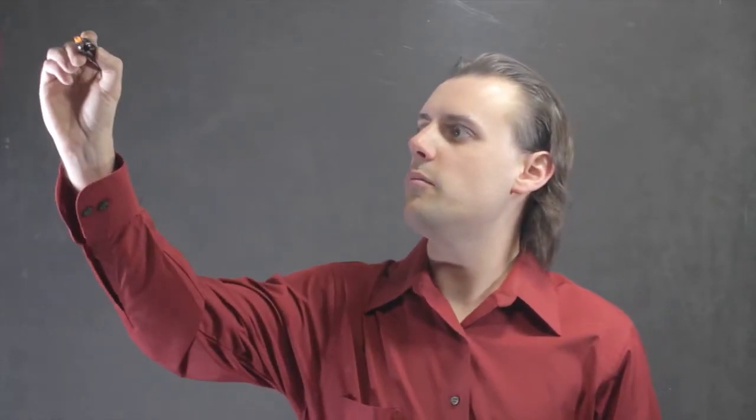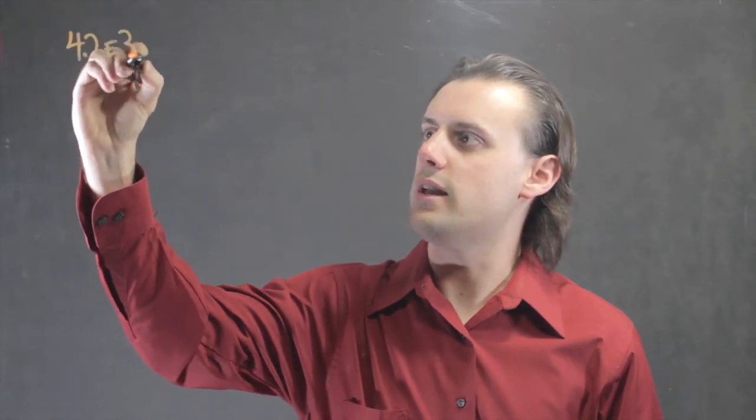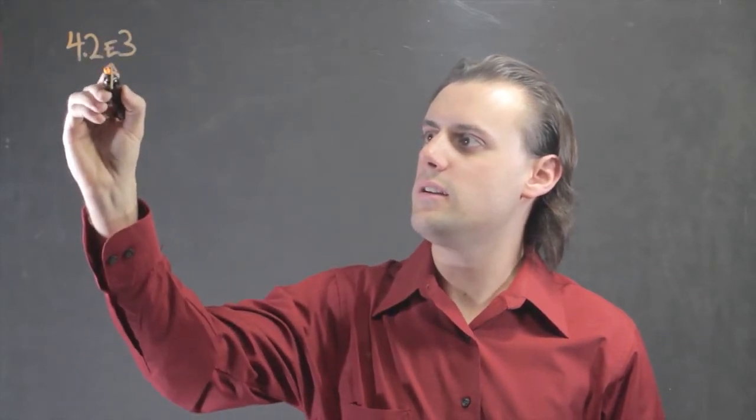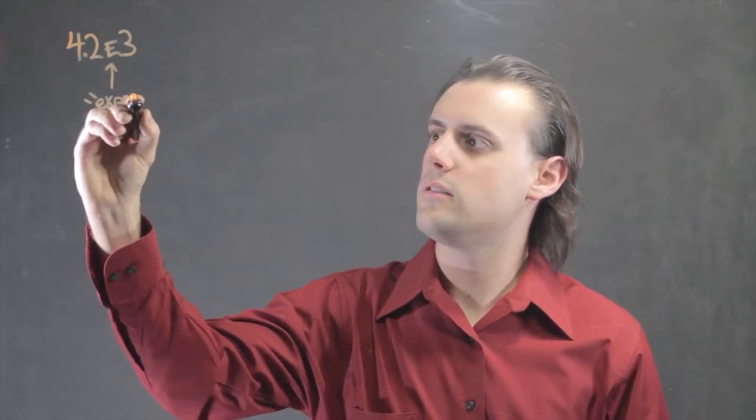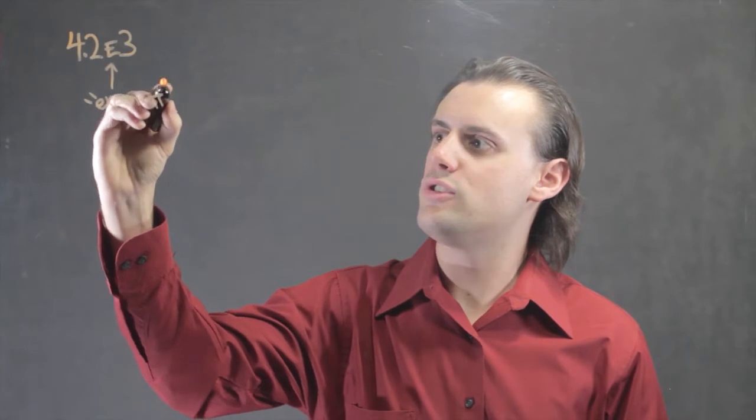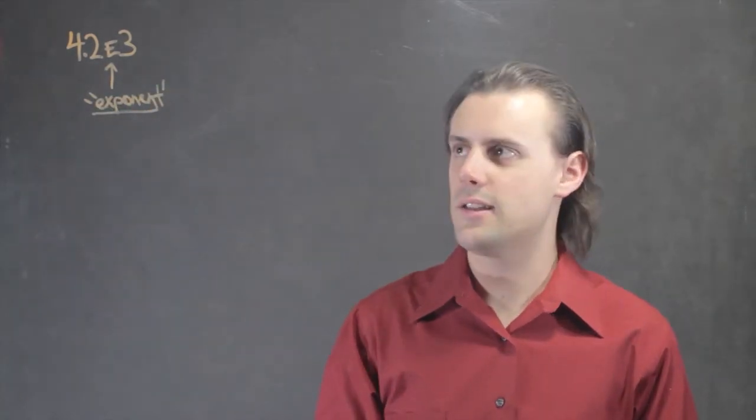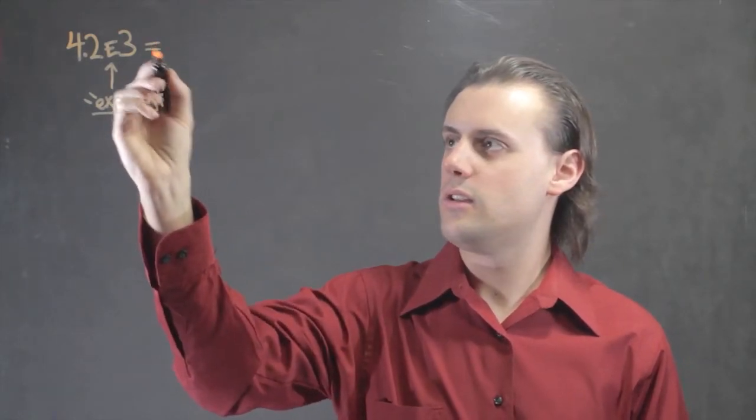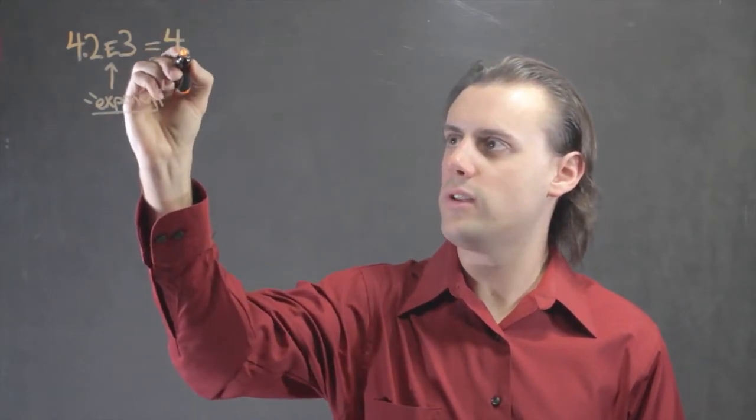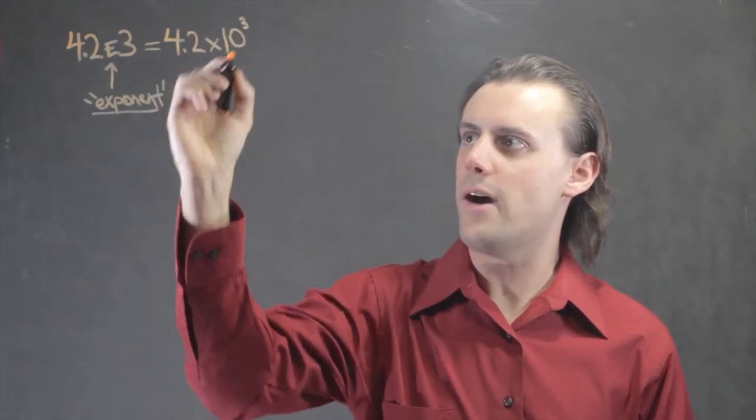By writing 4.2, for example, e3. This e stands for exponent, and this shorthand form of scientific notation can be slightly expanded in scientific notation to be written as 4.2 times 10 raised to the third power.